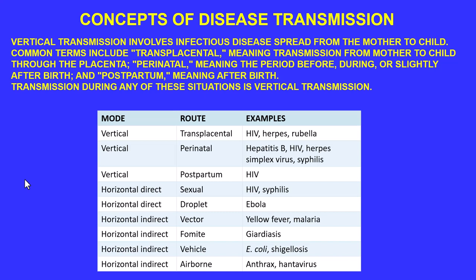Horizontal direct transmission by droplets — the most frightening example is Ebola. The virus destroys epithelial cells in the capillaries, so the person bleeds from every orifice — eyes, mouth, etc. As they move or shake, the fluid becomes aerosolized and can be picked up by nursing staff. That's why during the West Africa outbreak, healthcare workers had to wear extreme personal protective gear to prevent contracting the disease.